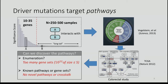This raises the obvious research question: can we discover the pathways? One idea would be to enumerate gene sets and test them for over-representation of mutations, but there are too many gene sets to test and we'd never be able to choose statistical significance. Another idea would be to look at known pathways or gene sets, but we'd be limited in discovering novel pathways or crosstalk between pathways. Today we're going to talk about a different strategy involving mutually exclusive mutations.